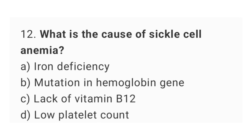Question number twelve: what is the cause of sickle cell anemia? The right answer is option B, mutation in the hemoglobin gene.